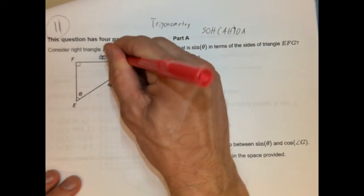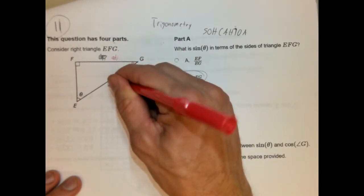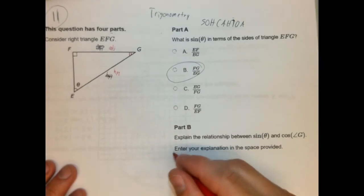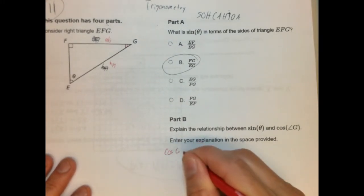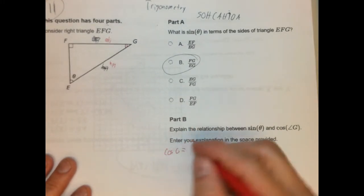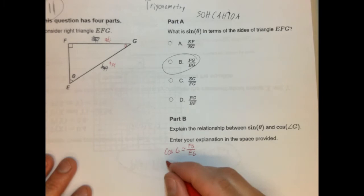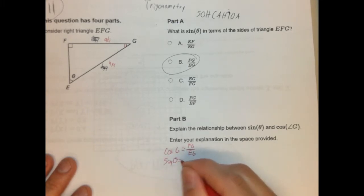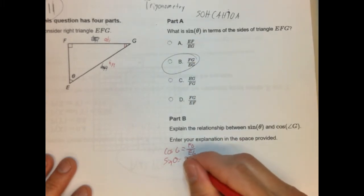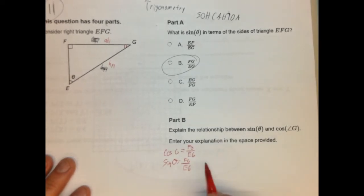So this is the adjacent, and this is the hypotenuse. So cosine of G is going to be FG, because that's our adjacent, over hypotenuse, which is EG. And the sine of theta is, as we remember, FG over EG. So what's their relationship? They're the same thing. You would simply just say they are equivalent.